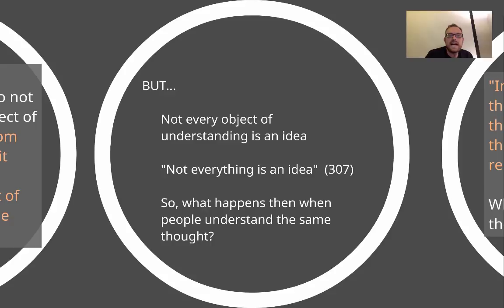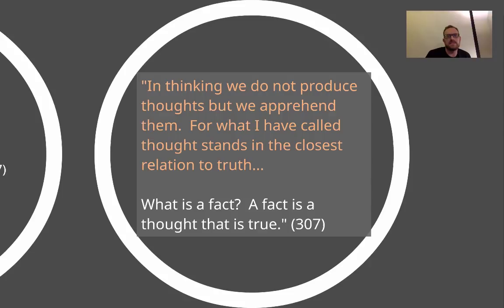What does that mean exactly for two people to understand the same thought? Frege says, quote: "In thinking, we do not produce thoughts, but we apprehend them. For what I've called thoughts stand in the closest relation to truth." When I say A squared plus B squared equals C squared is true, the truth of it isn't grounded in my idea or my concept — the truth of it is grounded in the objective characteristics related to right angle triangles. So the thought stands closer to the truth than the idea. When I recognize and understand the Pythagorean theorem, I'm apprehending a thought, not making a thought.